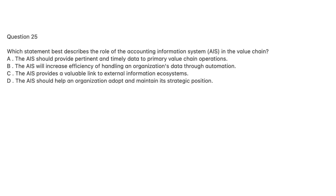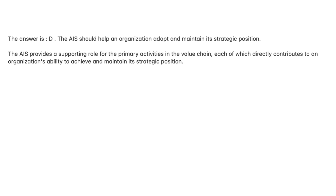Question 25. Which statement best describes the role of the accounting information system, AIS, in the value chain? A. The AIS should provide pertinent and timely data to primary value chain operations. B. The AIS will increase efficiency of handling an organization's data through automation. C. The AIS provides a valuable link to external information ecosystems. D. The AIS should help an organization adopt and maintain its strategic position. The answer is D. The AIS provides a supporting role for the primary activities in the value chain, each of which directly contributes to an organization's ability to achieve and maintain its strategic position.